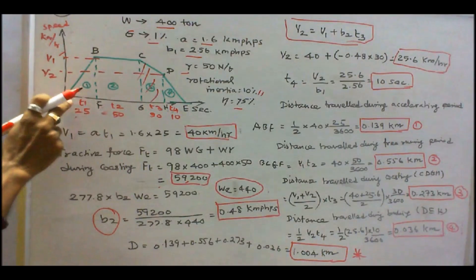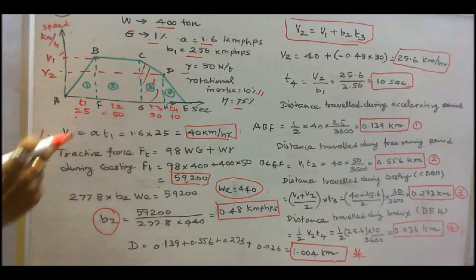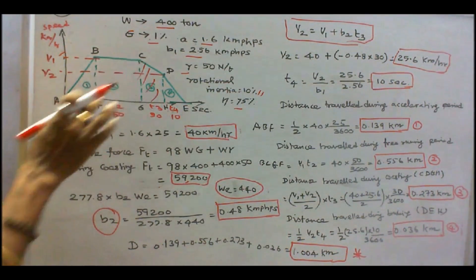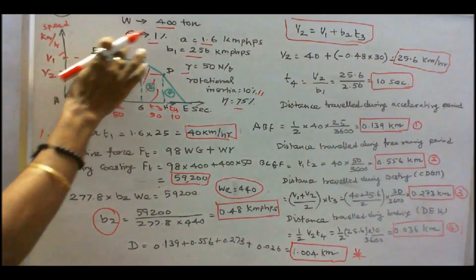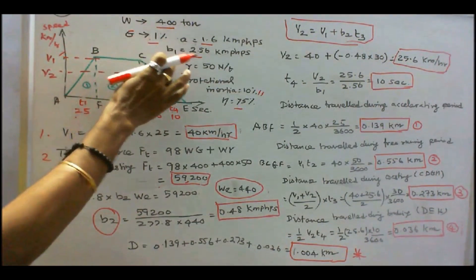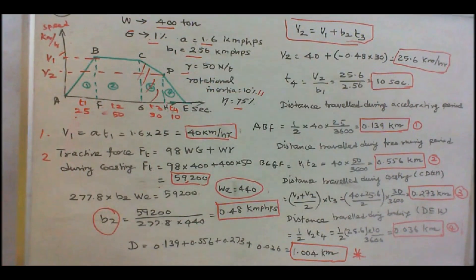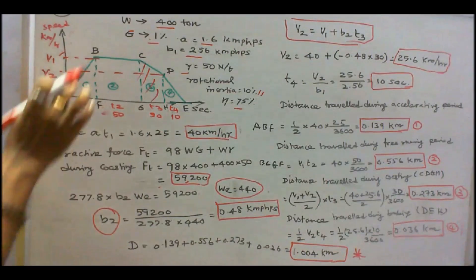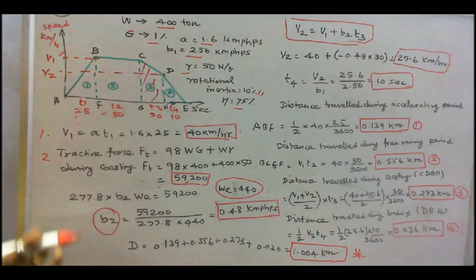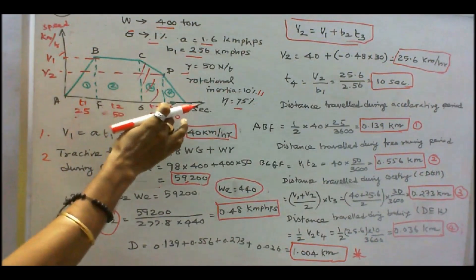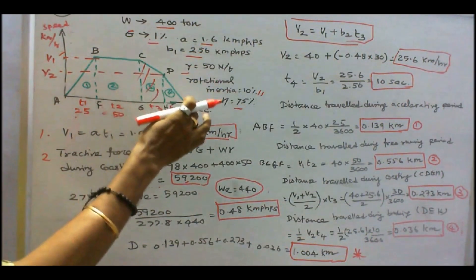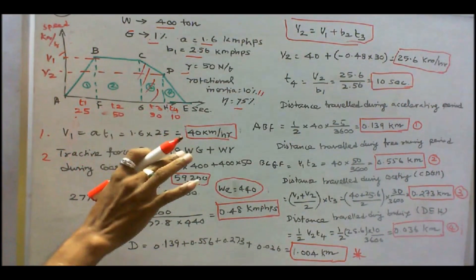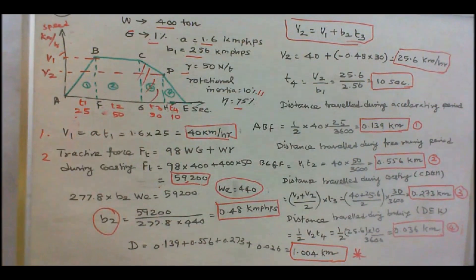The speed-time curve has: AB as acceleration (25 s), BC as free running (50 s), CD as coasting (30 s), and DE as braking. The four areas under the curve — ABF1, BCGF2, CDHG3, and DEH4 — represent distances travelled during each respective period. We need to find the total distance travelled.